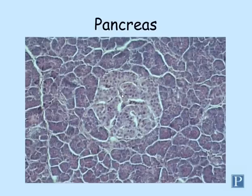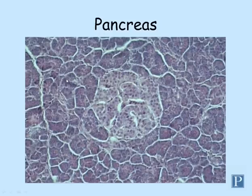This is a high magnification section of the pancreas. We've seen this one previously as part of the digestive system because part of it is actually exocrine tissue. This gland has a dual role — about 98% of the tissue is exocrine, composed of these serous acini.